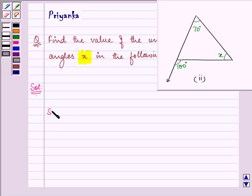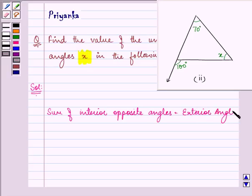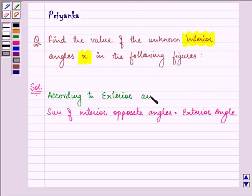We know that the sum of interior opposite angles is equal to the exterior angle. That is, according to the exterior angle property of a triangle.